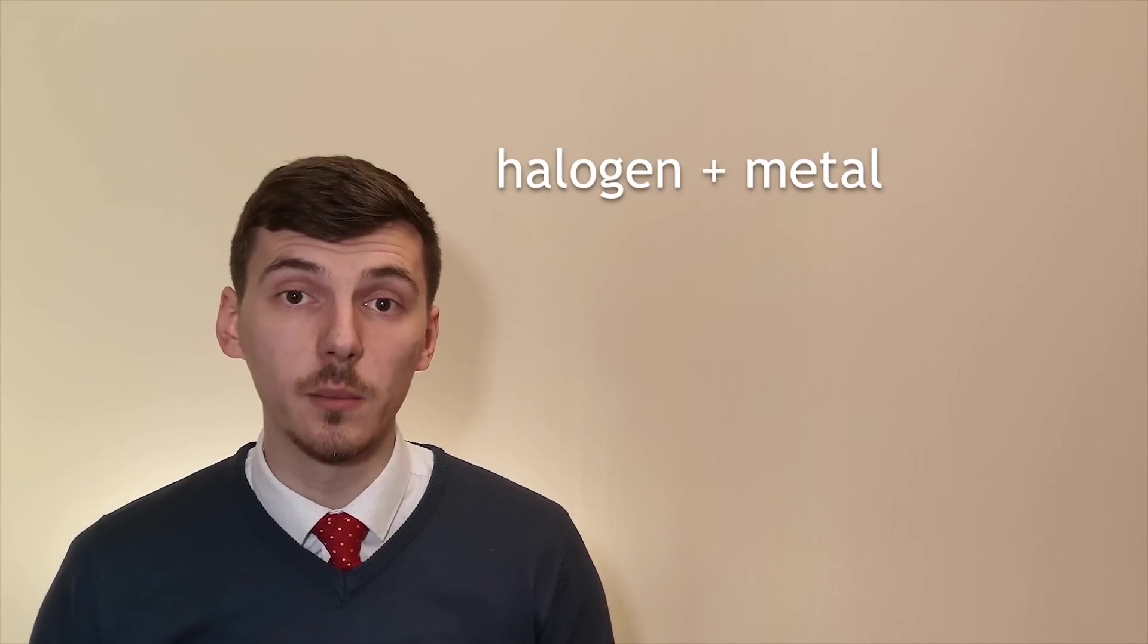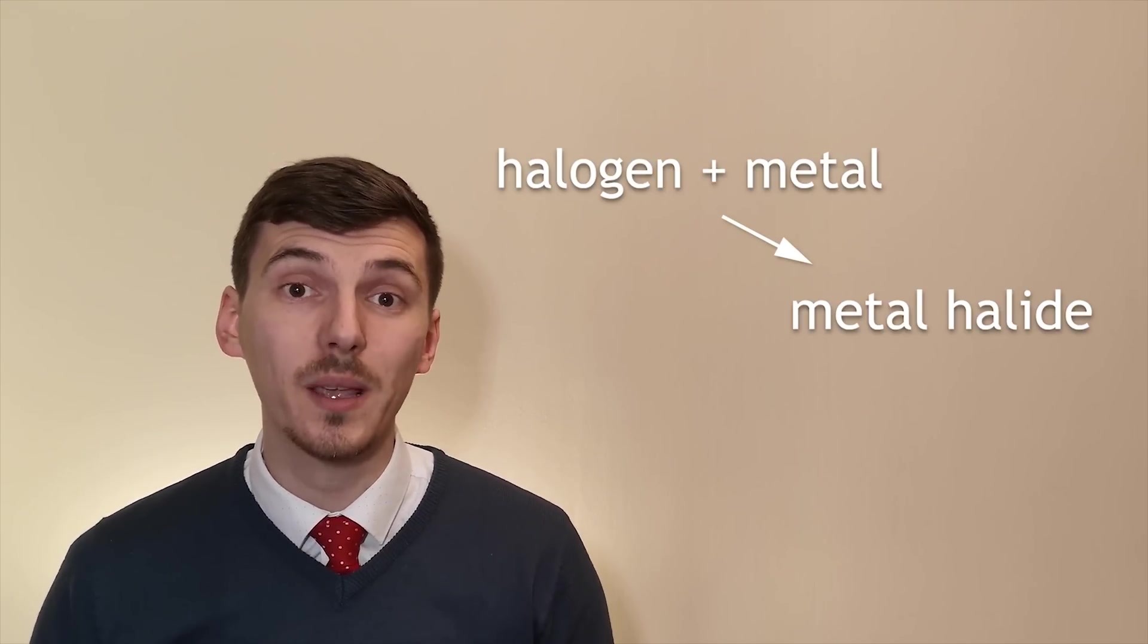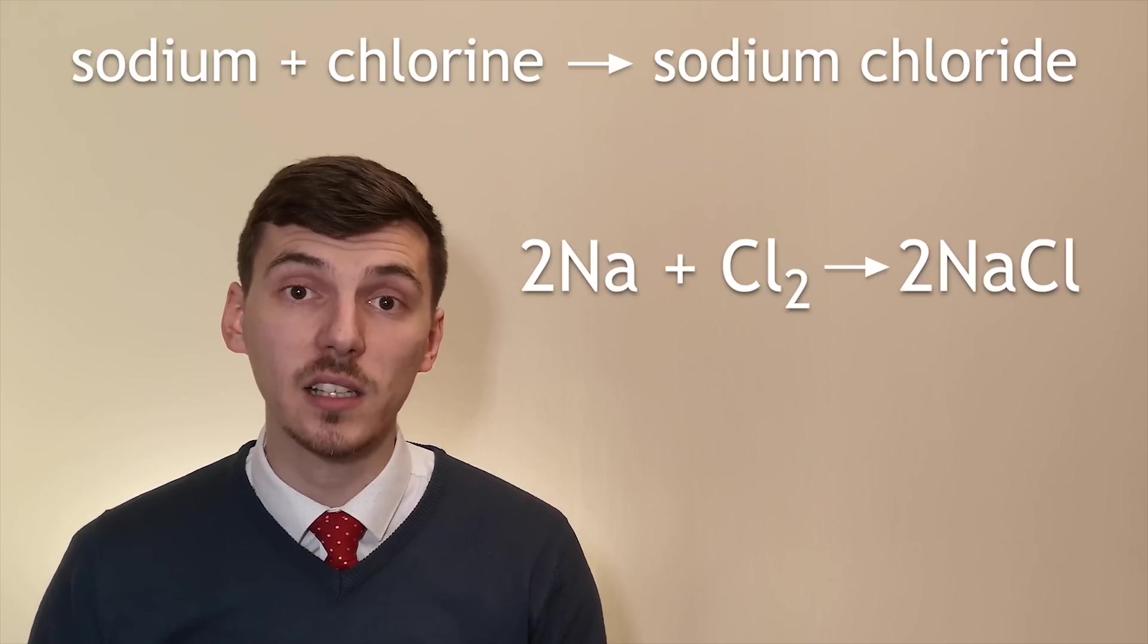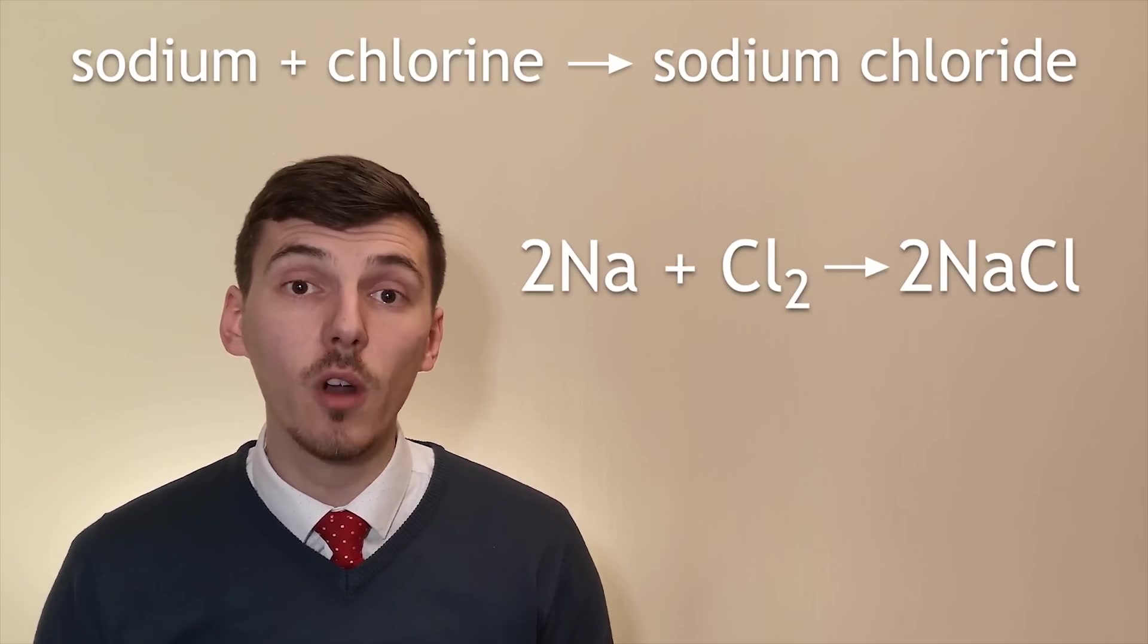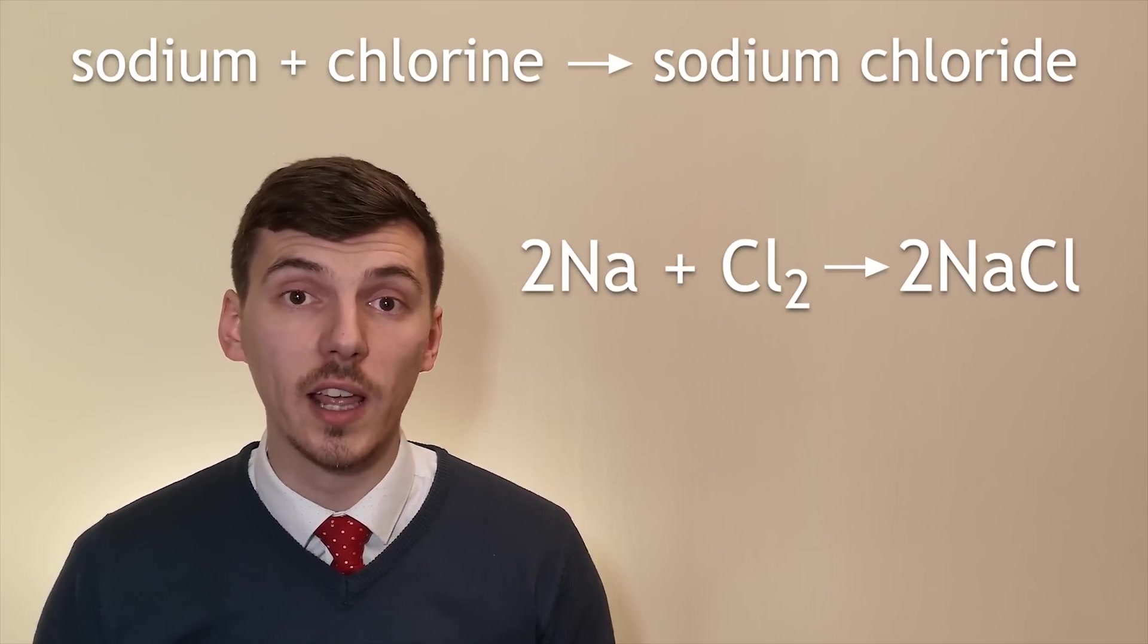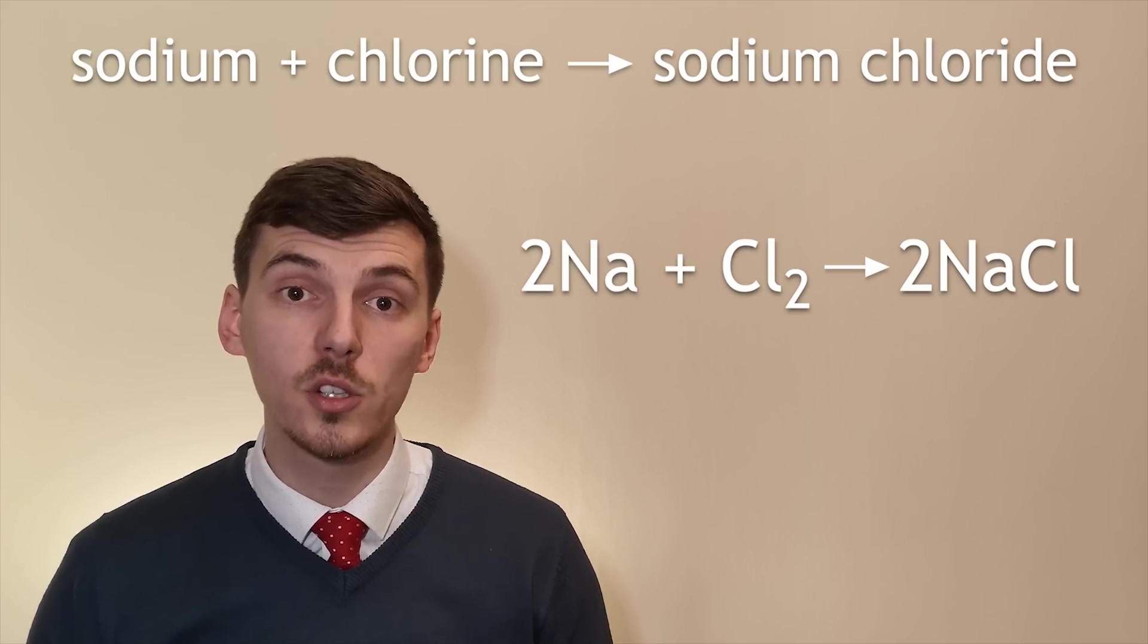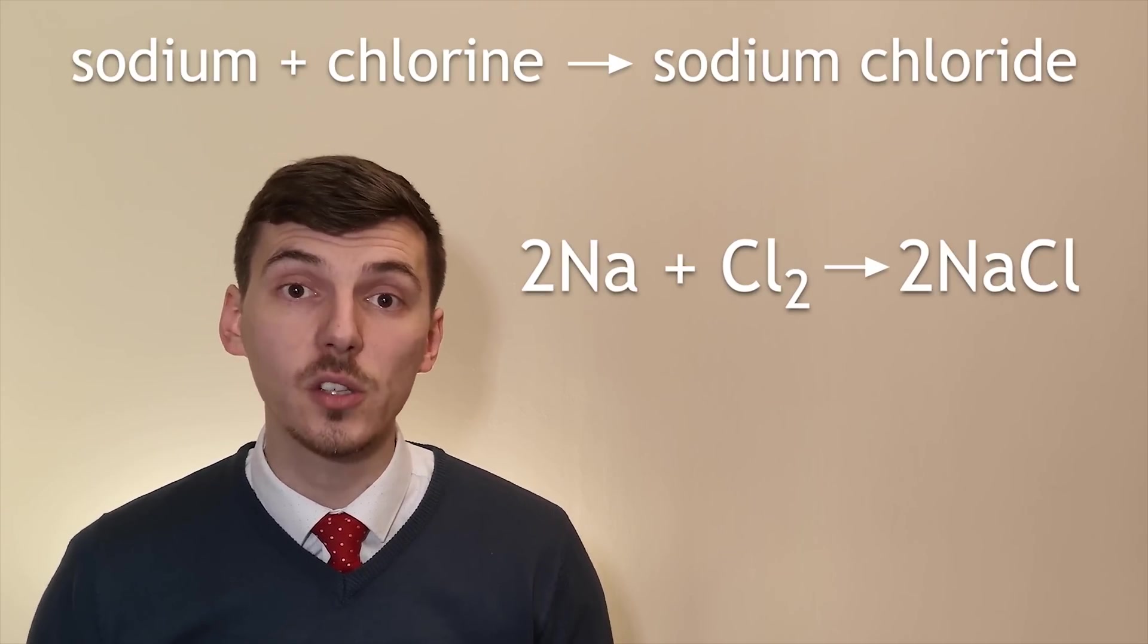We can react the group 7 elements with metals to make metal halides. The most common metal halide is sodium chloride and we make that by reacting sodium metal with chlorine gas. We can write a word and symbol equation for this reaction as shown. Sodium plus chlorine makes sodium chloride.